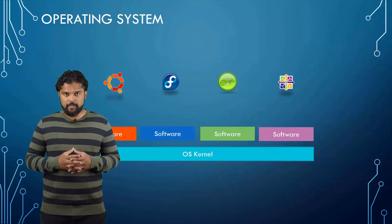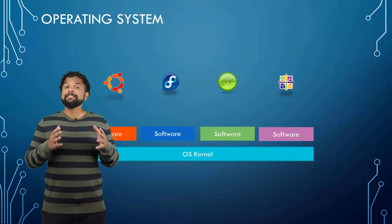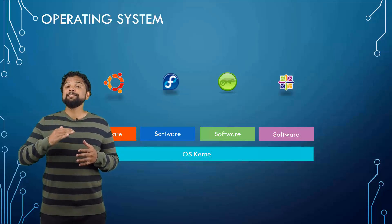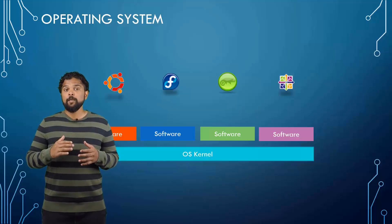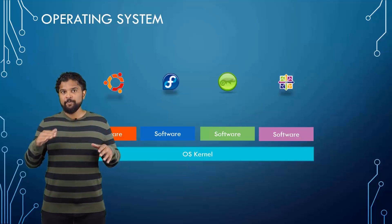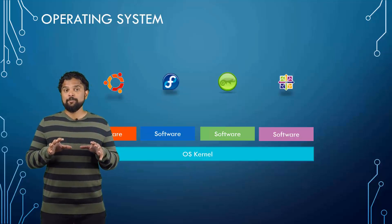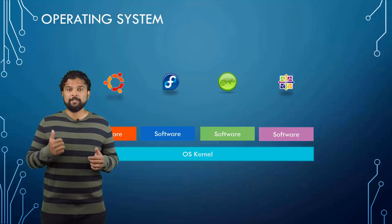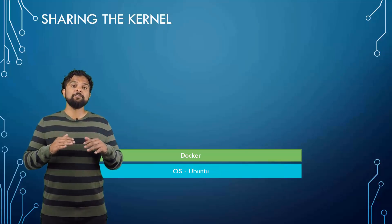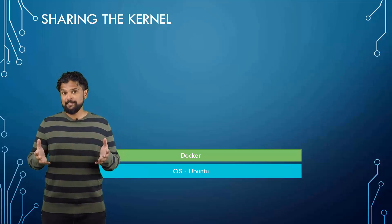To understand how Docker works, let us revisit some basic concepts of operating systems. If you look at operating systems like Ubuntu, Fedora, SUSE, or CentOS, they all consist of two things: an OS kernel and a set of software. The operating system kernel is responsible for interacting with the underlying hardware. While the OS kernel remains the same — which is Linux in this case — it's the software above it that makes these operating systems different. This software may consist of a different user interface, drivers, compilers, file managers, developer tools, etc. So you have a common Linux kernel shared across all operating systems and some custom software that differentiates them from each other.